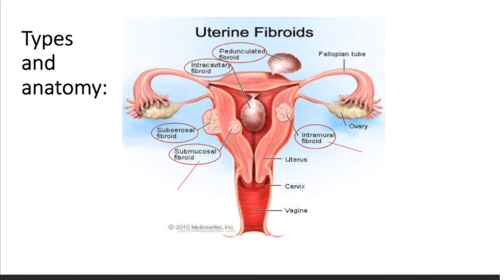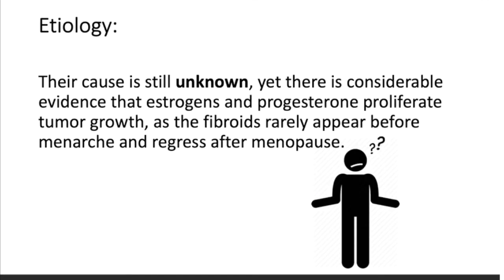You can see here, for example, the pedunculated fibroid, the intracavitary, and the subserosal. There are a few other types that you can see here, but these are the most common ones.